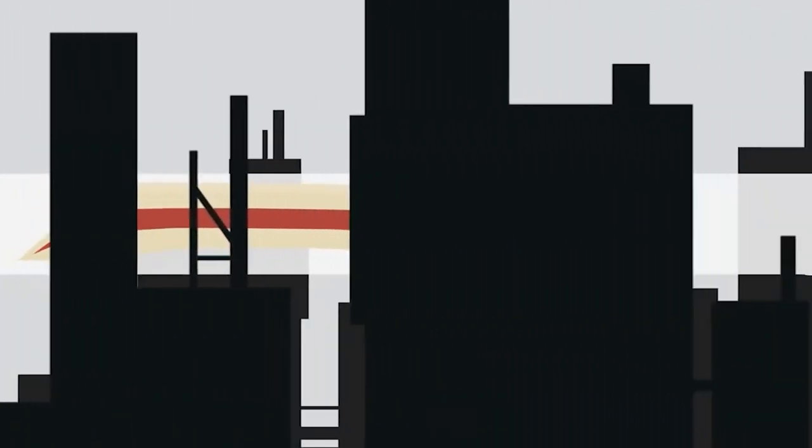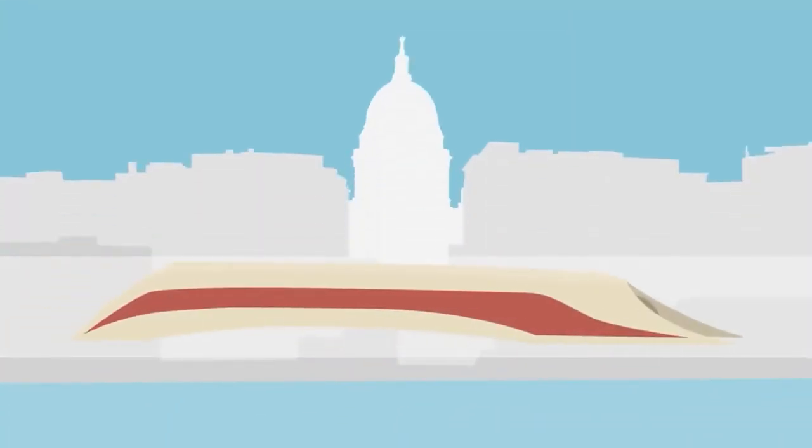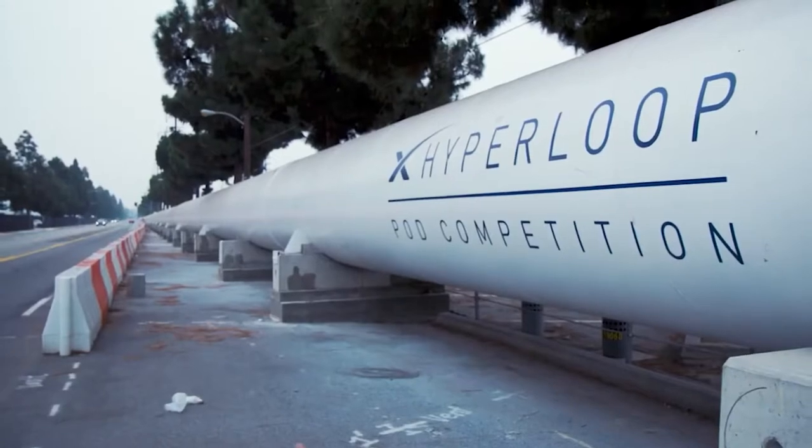Due to the minimal air resistance in the system, traveling by Hyperloop would be both incredibly fast and sustainable, with top speeds potentially exceeding 600 miles per hour. This would allow commuter travel between Minneapolis and Chicago in under 90 minutes.